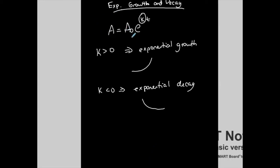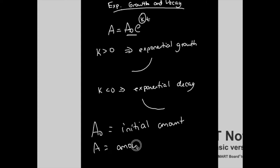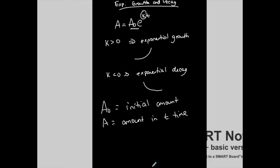We're going to use this function in many different ways. You may have seen it with compound interest compounded continuously, but we'll also use it for half-life problems. A₀ (A-naught) is the initial amount — if we plug in t = 0, e to the zero is 1, so we get A₀. A is the amount after time t, and t can be in years, days, or weeks depending on the situation.